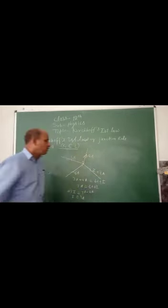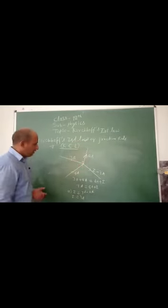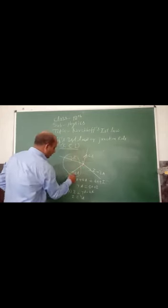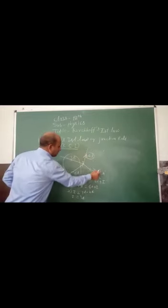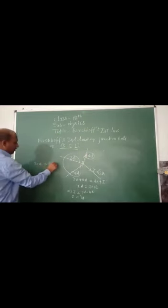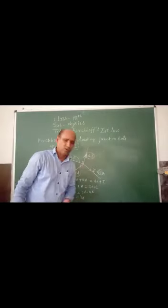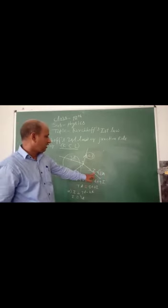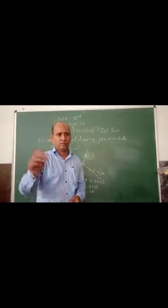We can also verify using conservation of charges: current entering the junction is 3 plus 4 equals 7 amperes, which must equal the current leaving the junction, 4 plus 3, which also equals 7 amperes. In this way we can find out the unknown current flowing in a junction. Thank you, have a nice day.